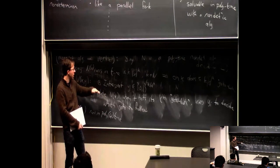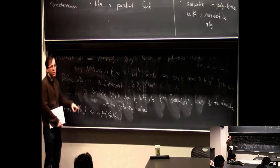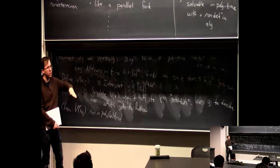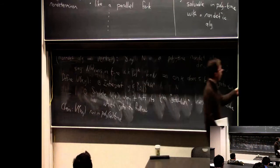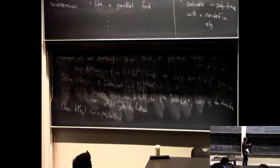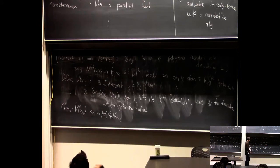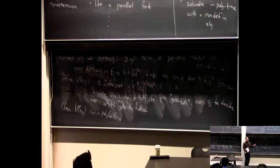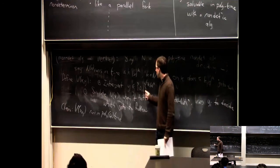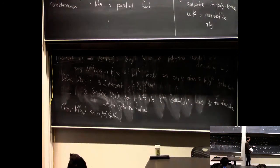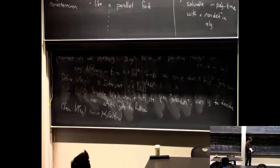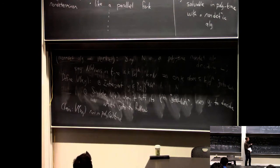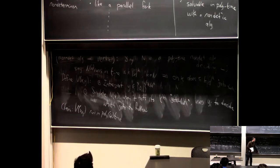The equivalence holds because: on a given y, V accepts if and only if the branch defined by y causes the non-deterministic machine to accept. I also need to check that V never gets stuck by running out of bits of y. But since N does at most k·|x|^k go-to-boths, it'll never encounter more go-to-boths than it has pre-chosen choices for. So the simulation always terminates properly, completing the second direction of the proof.